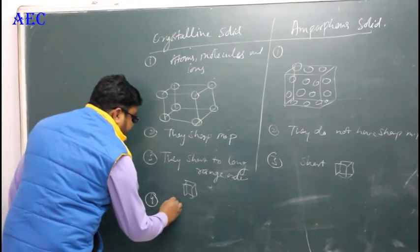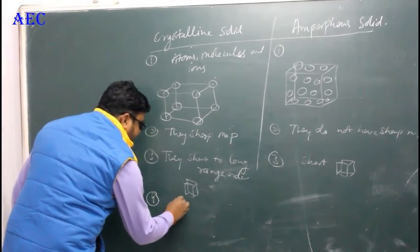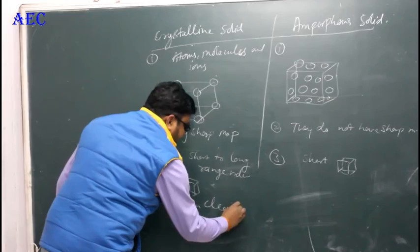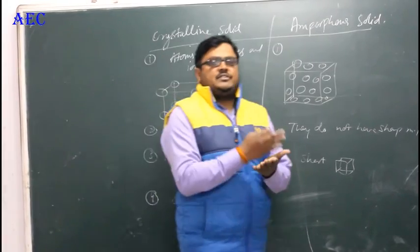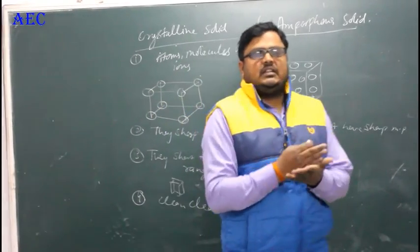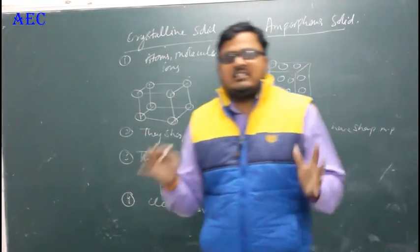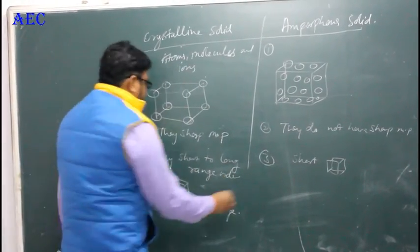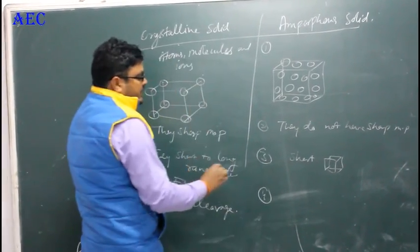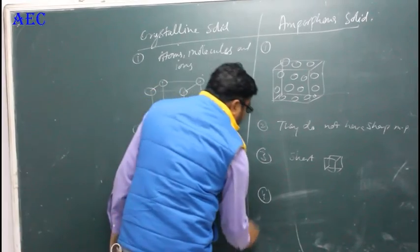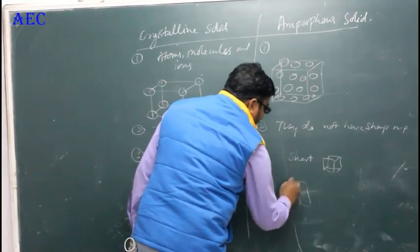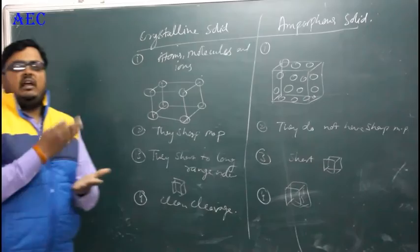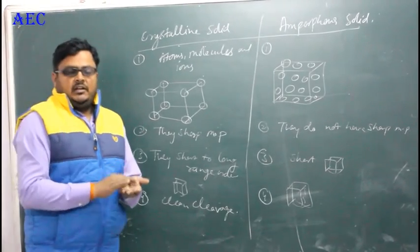Fourth point: on cutting with a knife, crystalline solids give a clean cleavage — a perfectly clear cut. Amorphous solids do not give a clean cut; irregular surfaces appear when they are cut with a knife.